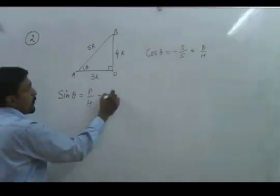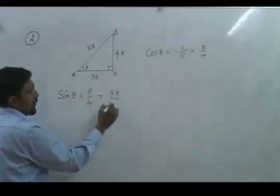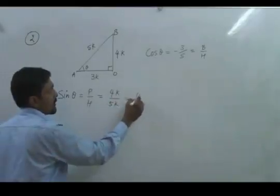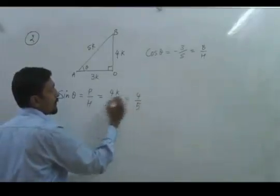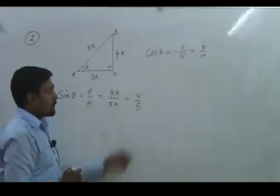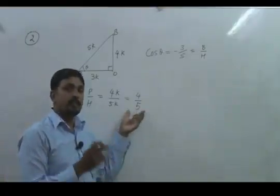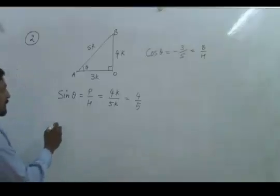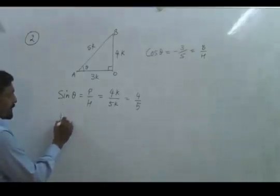Now if we are asking sine, so sine theta is perpendicular upon hypotenuse. So perpendicular here is 4k, hypotenuse is 5k, so result is 4 by 5. We put positive sign because theta lies in second quadrant.